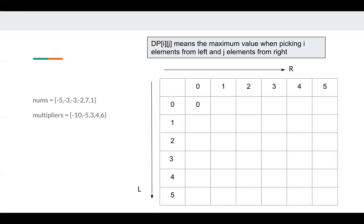DP[i][j] means the maximum value when picking i elements from the left and j elements from the right. DP[0][0] means we don't pick any numbers, so the value is zero. DP[1][0] means we pick one number from the left and zero from the right — that's negative 5 multiplied by negative 10, giving us 50. DP[0][1] means we get one number from the right, which is negative 10 multiplied by 1, giving negative 10.